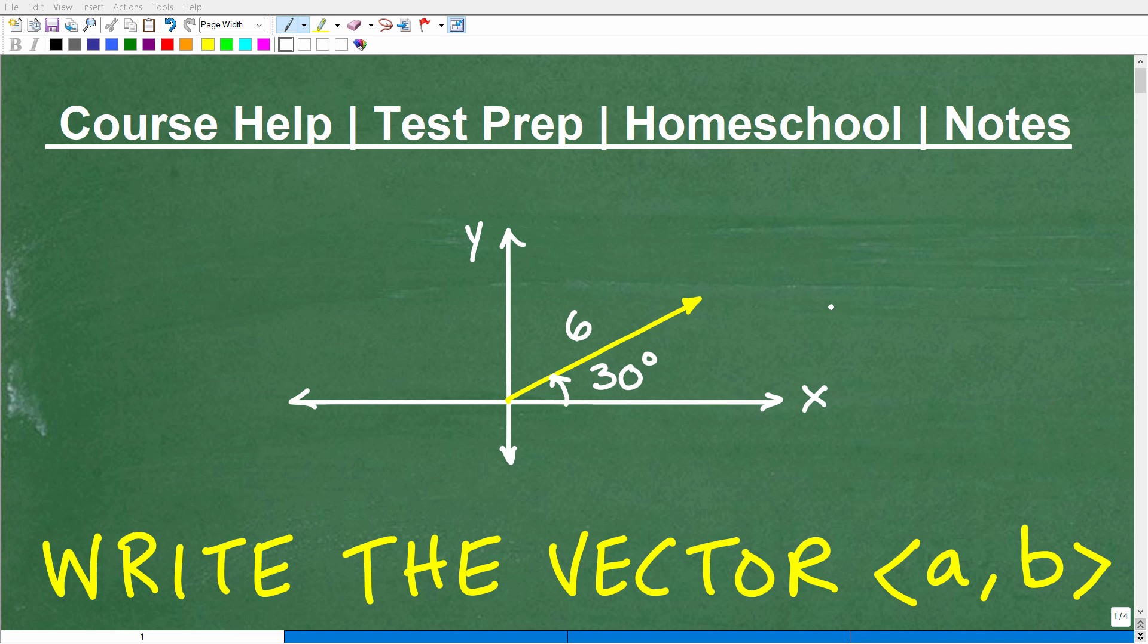Okay, let's talk about vectors. Here is a vector right here, this little yellow arrow. This vector happens to be in standard position, where it's emanating from the origin. But we want to write this vector in AB form, basically with its horizontal and vertical components. There are a lot of different ways we can express a vector. This is a pretty common way, so you definitely need to know how to do this.